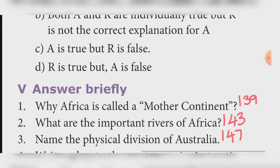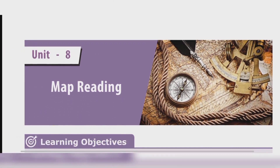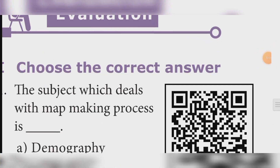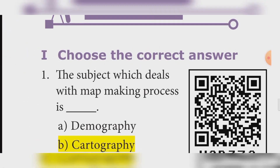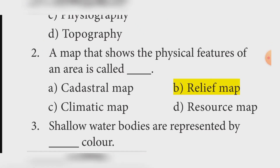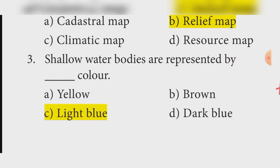Unit 8, Map Reading. Choose the correct answer. First: The subject which deals with the map-making process is Cartography, Option B. Second: A map that shows physical features of an area is called a Relief map, Option B. Third: Shallow water bodies are represented by light blue color. Fourth: Maps which are known as plans are Cadastral maps, Option A.